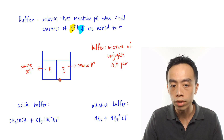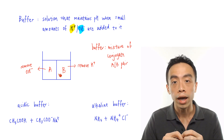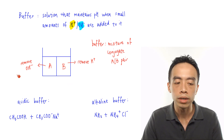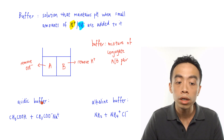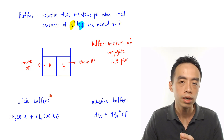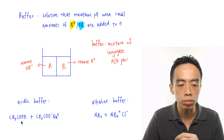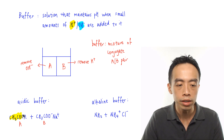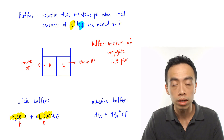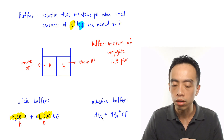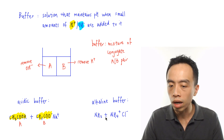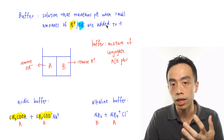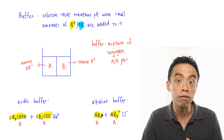The two components inside a buffer solution are related to each other, and the only difference between the acid and the base is one H+. For example, an acidic buffer contains ethanoic acid (CH3COOH) and sodium ethanoate (CH3COO-Na+). The acid is CH3COOH and the conjugate base is CH3COO-. An alkaline buffer contains ammonia (NH3) and ammonium chloride (NH4+Cl-), where NH4+ is the acid and NH3 is the base.